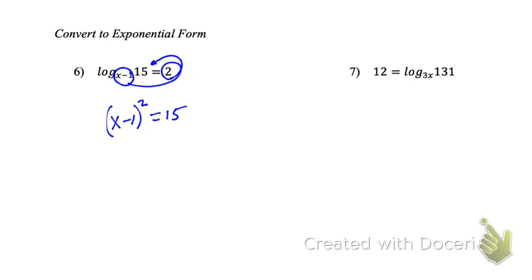Number 7, if you're good at that hook, you want to be good at doing it backwards. You would start with your base, 3X. What's it being raised to? The power of 12. You would also need parentheses here. What's it equal to? 131. 3X to the power of 12, quantity 3X to the power of 12 equals 131. And you must have those parentheses.